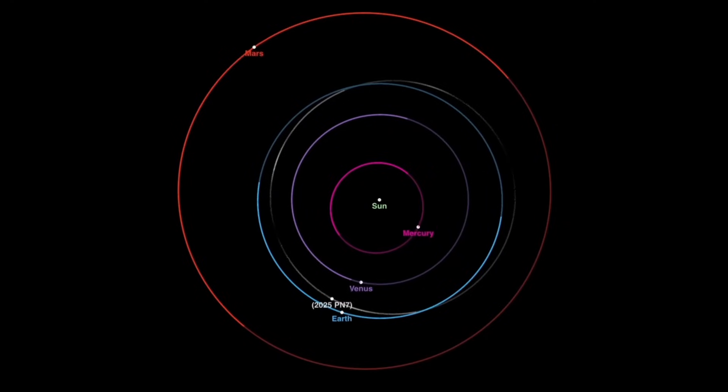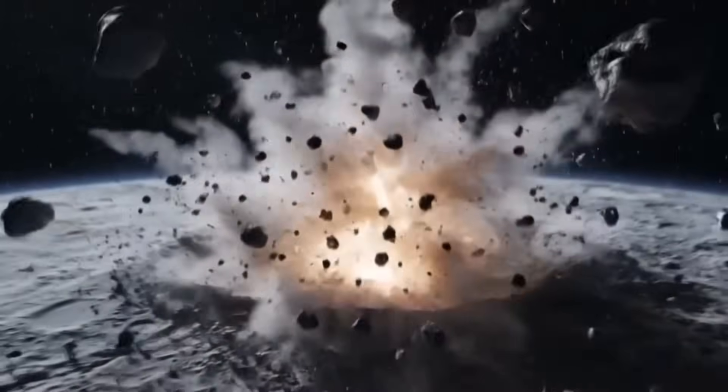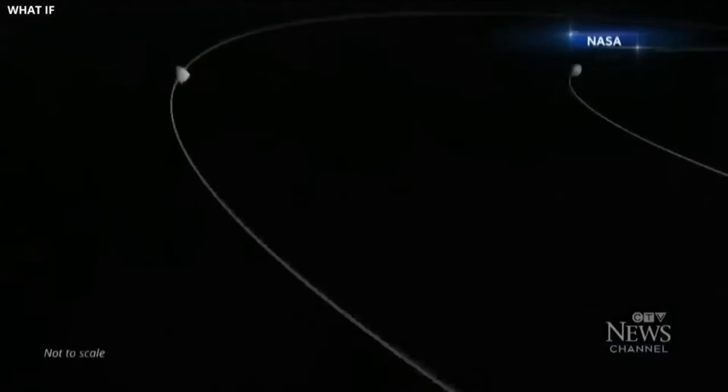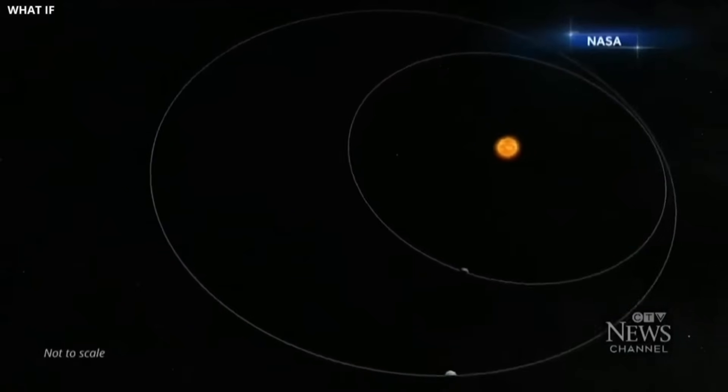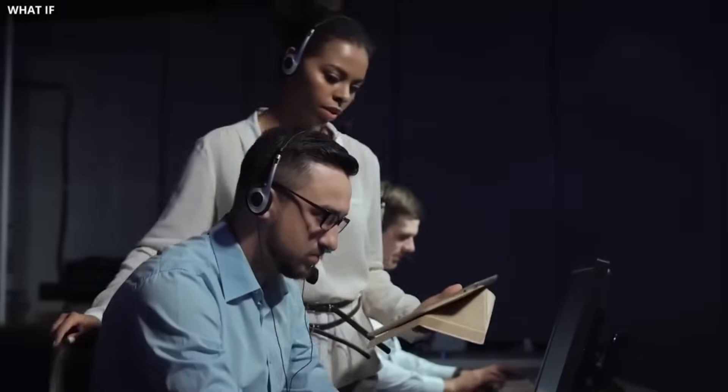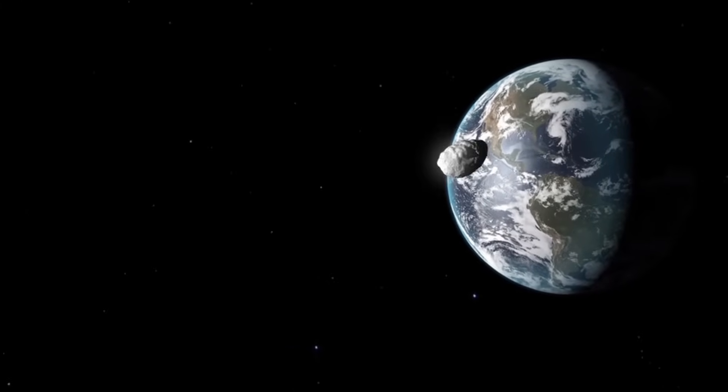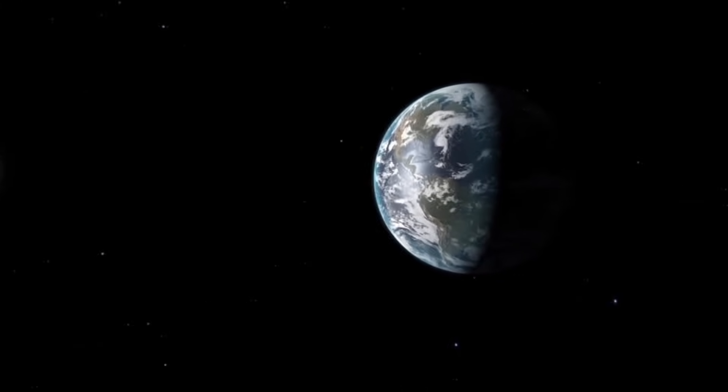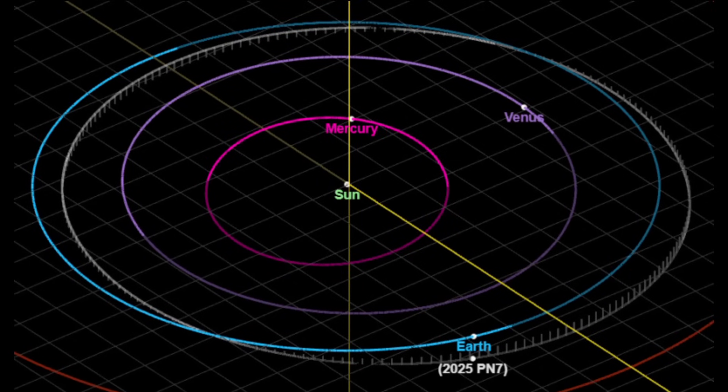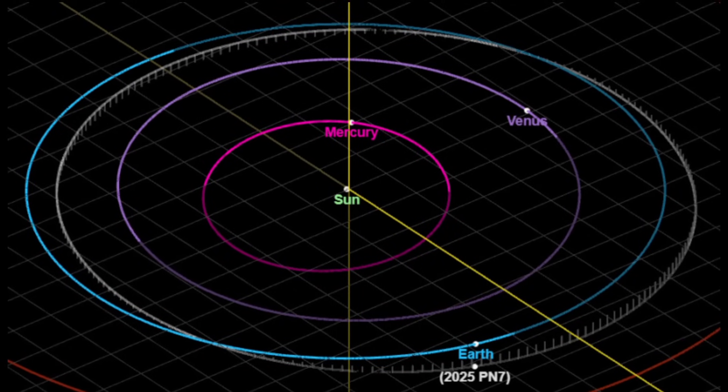That means it's possible that 2025 PN7 or others like it started out as material blasted off the Moon thousands or millions of years ago, then drifted and ended up locked into this Earth-synced orbit. But that origin story is still speculative. What we do know is that its orbital parameters place it firmly in the Arjuna class with an orbit that is unusually Earth-like.